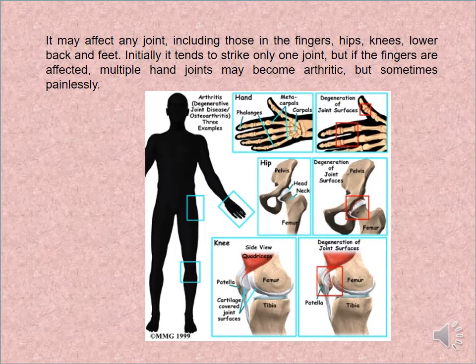Osteoarthritis may affect any joint, including those of the fingers, hip, knees, lower back, and feet. Usually it tends to affect only one joint, but if the fingers are affected, multiple hand joints may become arthritic — sometimes painlessly.